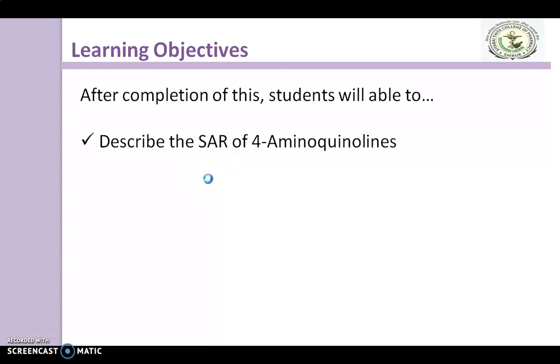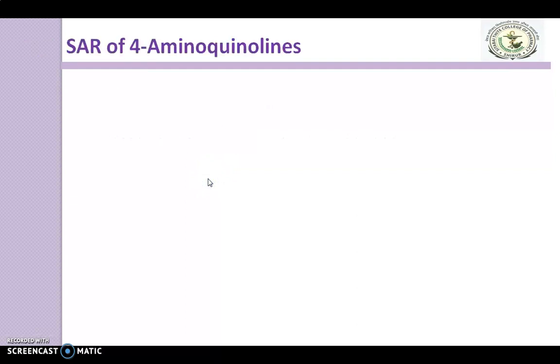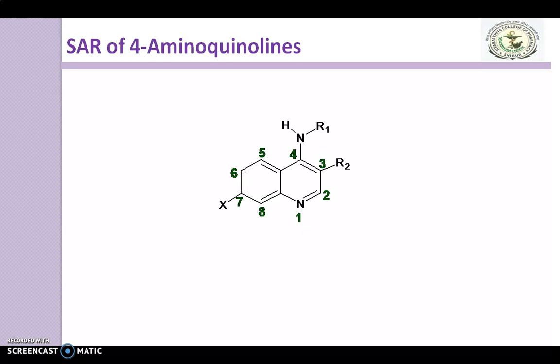Let's begin with the Structural Activity Relationship of 4-Aminoquinolines. The name itself reflects that it contains a quinoline ring having an amino group at the 4th position. Here is the structure — you can see the substitution of an amino group at the 4th position of the quinoline ring, and this amino group is a substituted one.